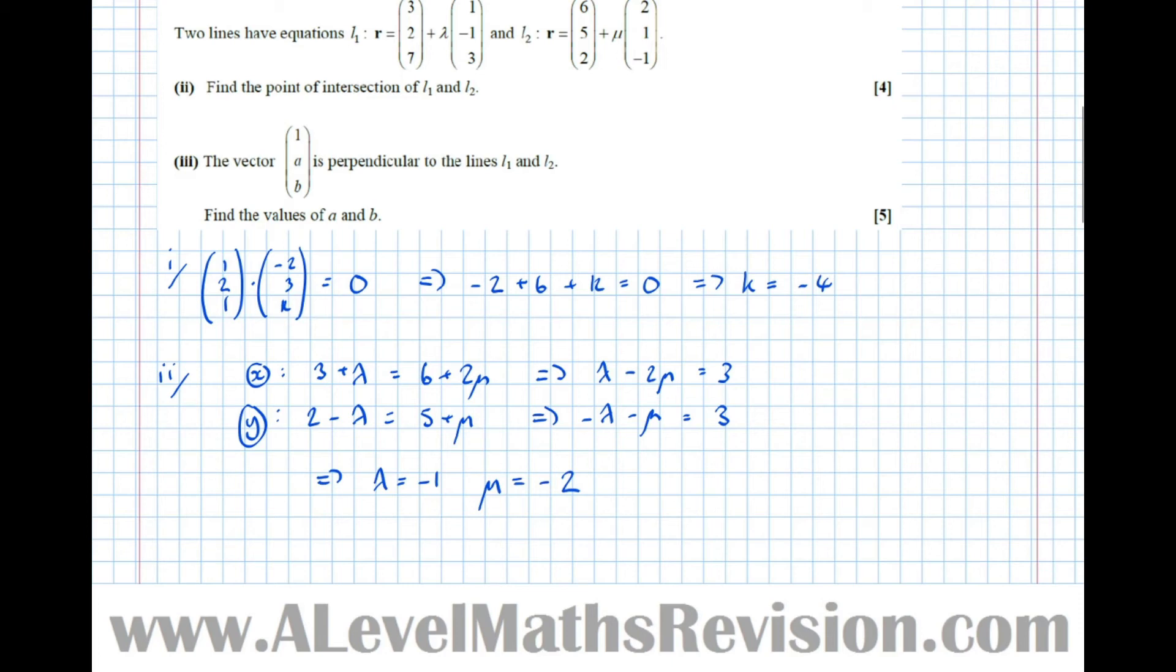1 lambda minus 2 mu is 3, minus lambda minus mu is also 3. I get that lambda equals minus 1, and mu equals minus 2. Let's just pick one of those, the easiest. Therefore, r equals 3, 2, 7, minus 1 times 1, minus 1, 3, which equals: 3 minus 1 is 2, 2 minus minus 1 is 3, and 7 minus 3 is 4. So the point at which they intersect is 2, 3, 4. Again, there's no need to check the z coordinate, because it's already told us that the lines intersect.